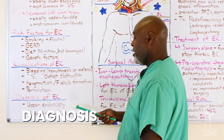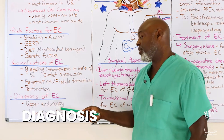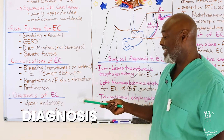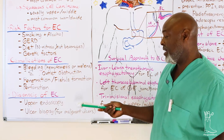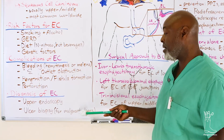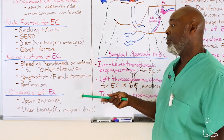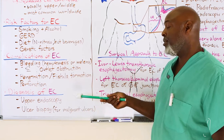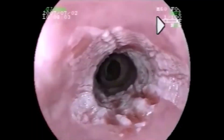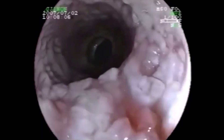As far as diagnosis, upper endoscopy is the first place to start. We sometimes will do an upper GI contrast study, but an EGD is the first step. Then you do a biopsy of anything that looks abnormal. Eventually you will more than likely have an endoscopic ultrasound to help stage the tumor.